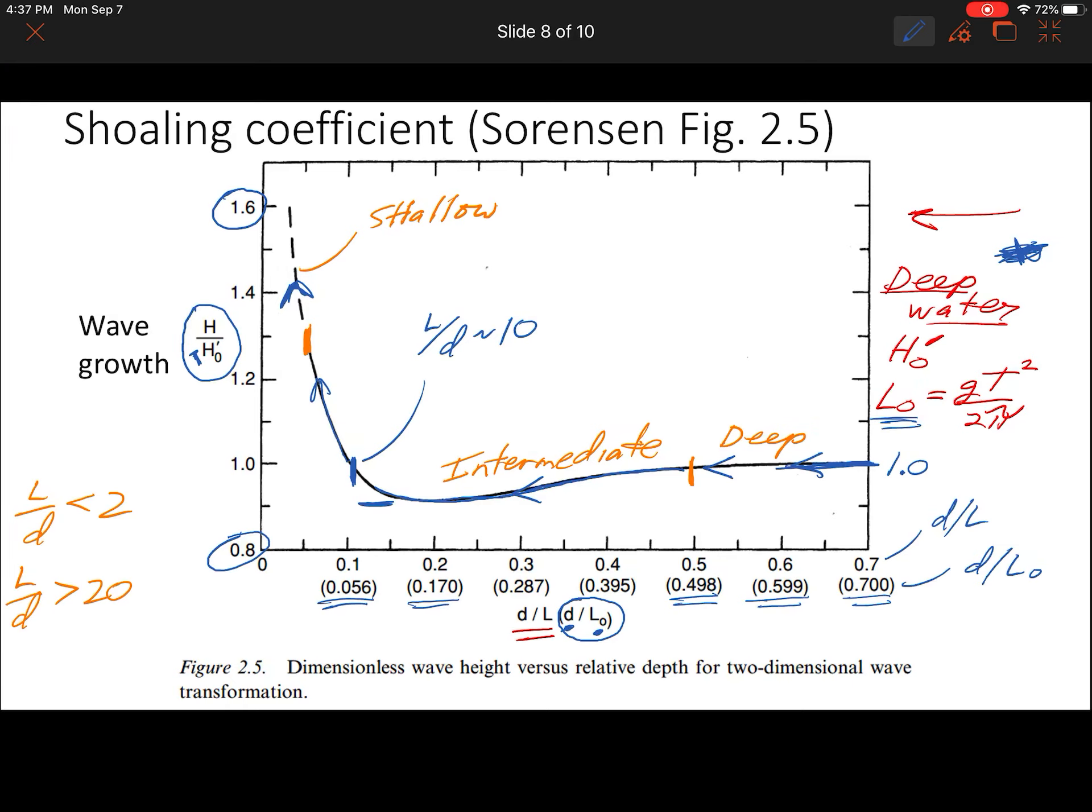It's a little bit confusing because you're taking the onshore water depth divided by the deep water wavelength. That would put you somewhere along the x-axis. You would walk your way up to this graph and then you would go over here and read the multiplier. Then you would just multiply through by the denominator, which is your deep water wave height.